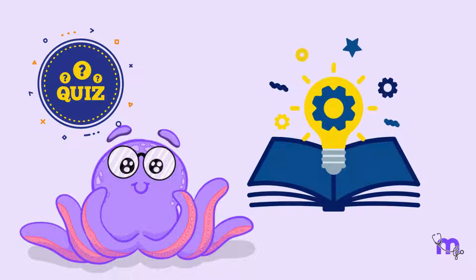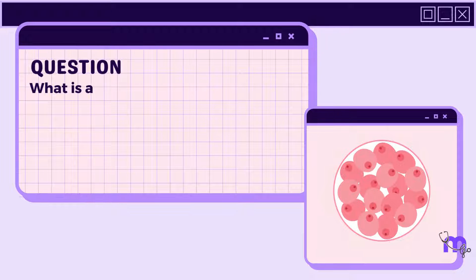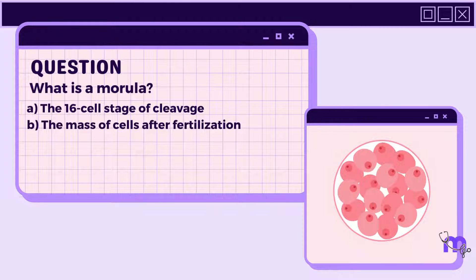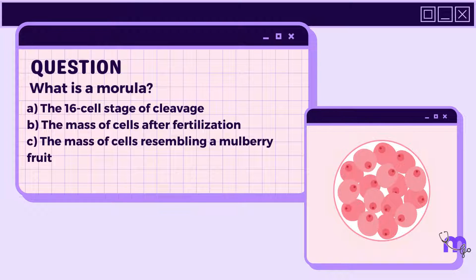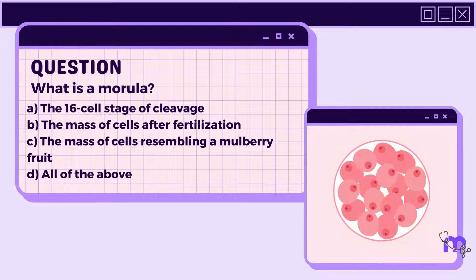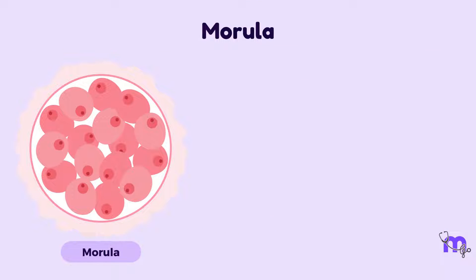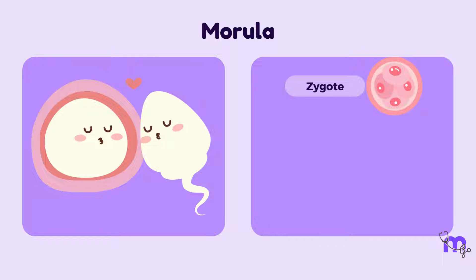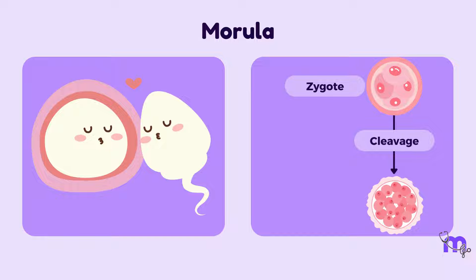Here's a quiz for a deeper understanding. What is a morula? A morula is a stage of early embryonic development. After fertilization, the zygote undergoes multiple cell divisions — a process called cleavage. When it reaches the 16-cell stage, it is called a morula, meaning mulberry.